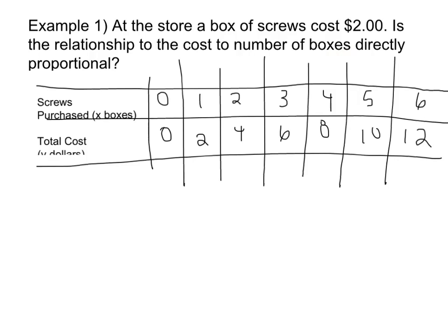Now we're going to go back to our example on the cost of screws. I made a table and you can see that if I buy zero boxes of screws, it obviously costs zero dollars. One box costs two dollars, two boxes cost four dollars, three boxes cost six dollars, and so on.